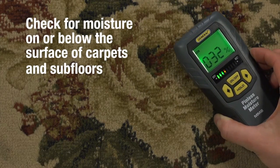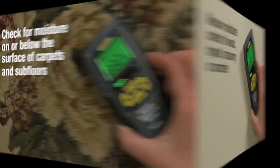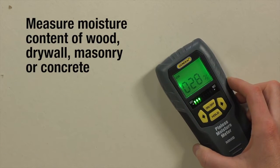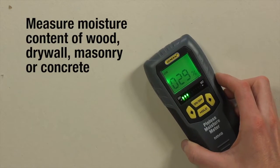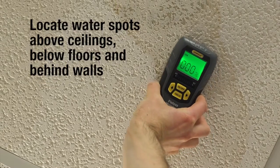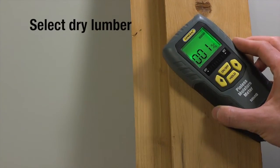Check for moisture on or below the surface of carpets and subfloors. Measure moisture content of wood, drywall and other smooth flat surfaces before you paint, wallpaper, seal or treat. Locate moisture in the ceiling, in the floor or in the wall. Select dry lumber.